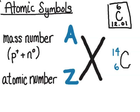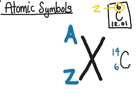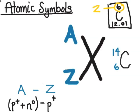The atomic number gives the number of protons, and we find that number of protons above the symbol for carbon in the periodic table. So: atomic number equals number of protons; mass number equals the sum of the number of protons and neutrons. If I know the mass number and the atomic number, I can find the number of protons, and with a bit of math, I can find the number of neutrons by taking mass number A minus atomic number Z.